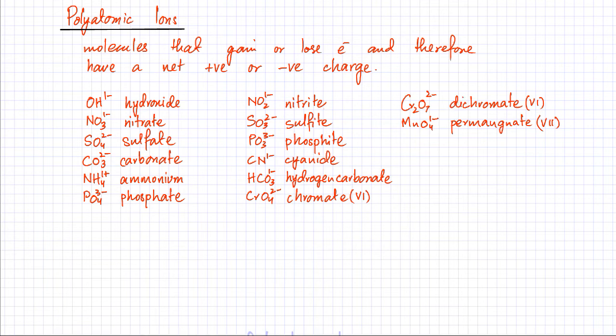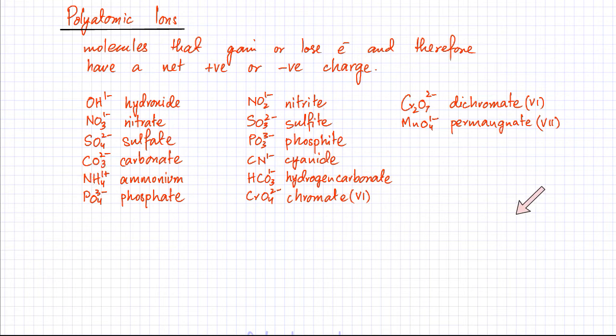This list of ions is very important — you would not be able to write an equation if you don't remember this entire list of polyatomic ions by heart. So you need to memorize this entire section, and whenever a nitrate, sulfate, carbonate, or phosphate comes up, you must know the formula of that particular polyatomic ion.